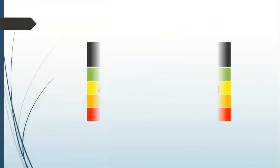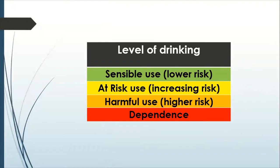There is a spectrum of alcohol use from sensible use at one end, when somebody is in the lower risk category and drinking within the limits recommended by the NHS — which is 14 units per week for men and women — and at the other end of the spectrum is dependence, which is the layman's addiction. Between these stages there can be at-risk use, which is when somebody drinks higher than the recommended 14 units per week and is at increased risk. The next stage up would be harmful use, which would be in the higher risk category. Harmful use and dependence are both substance use disorders.